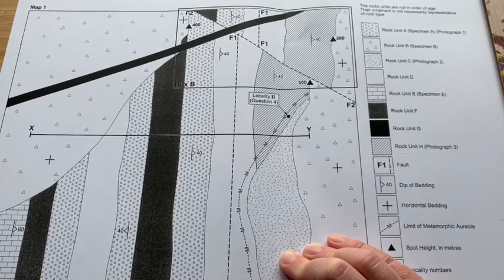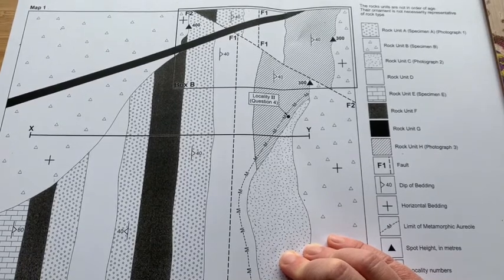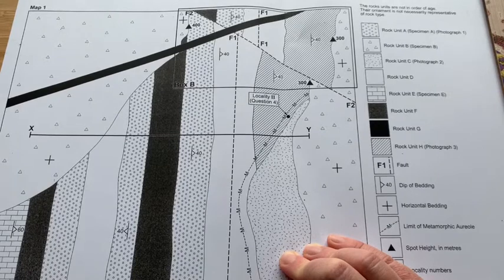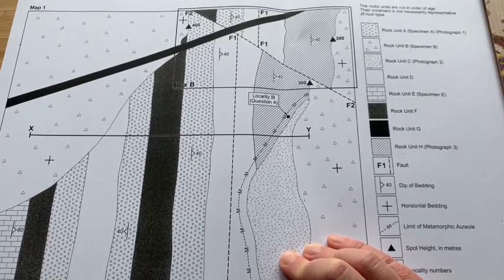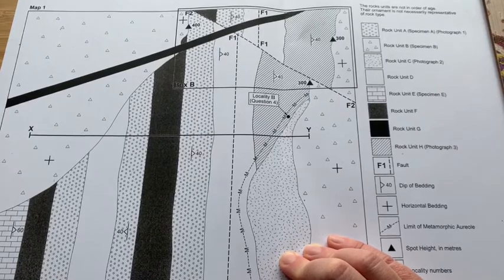This is the 2018 GL2 map. As ever, we're going to interpret features that we can see on the map in order to determine the order in which we're going to draw the cross section.